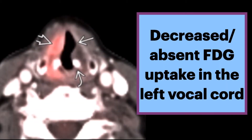Here is an axial PET/CT. The curved arrow shows anteromedial arytenoid rotation, and the straight arrow shows ballooning of the laryngeal ventricle. The open arrow shows asymmetric uptake in the normal right cord — this is not to be mistaken for a tumor, because in this case there was decreased or absent FDG uptake in the paralyzed left vocal cord.